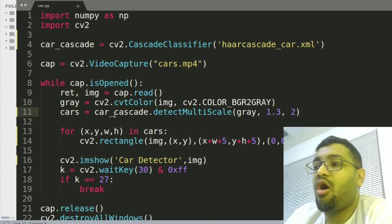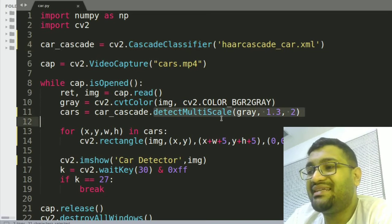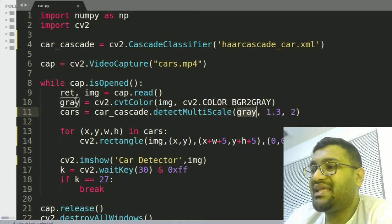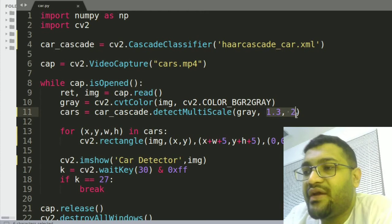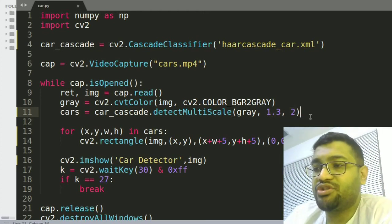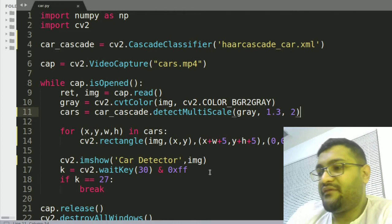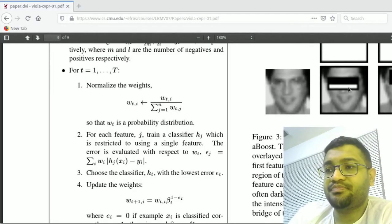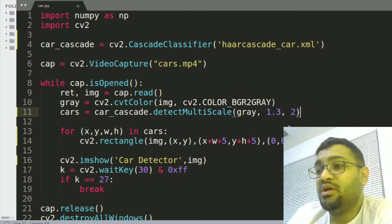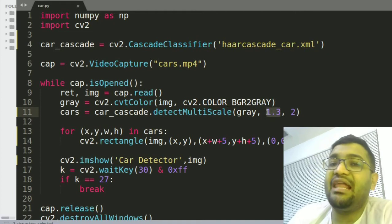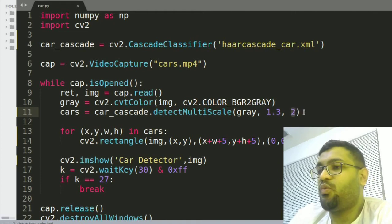The third step is where we call the cascade classifier which we defined in this step and we are using this function detect multi-scale gray. Gray is nothing but the image which we converted into the gray image, and these are two variables 1.3 and 2. So what is this? The patterns, the window—you remember initially when we went over to the page, this window—so we are defining the size, we're giving the properties of that window. So 1.3 is nothing but the scale factor of the image and 2 defines the number of neighbors in that image. So what does that explain?